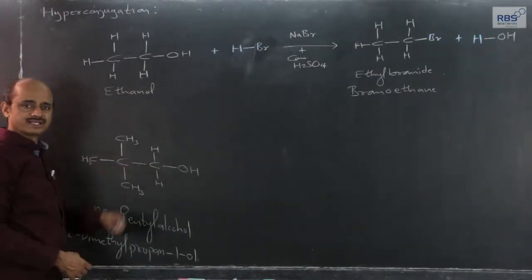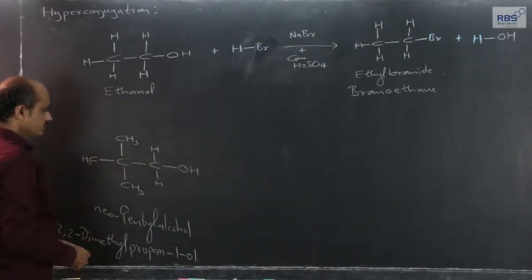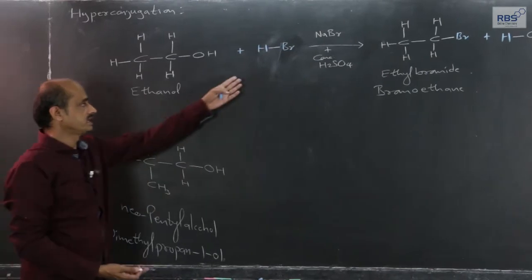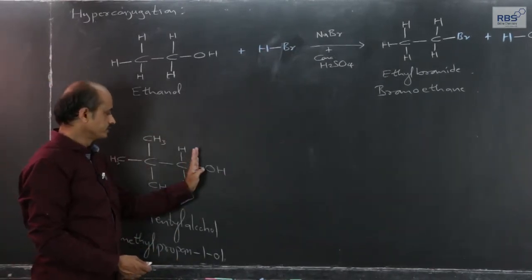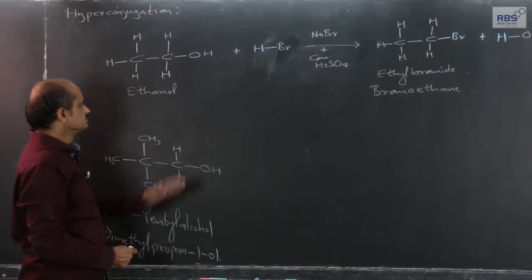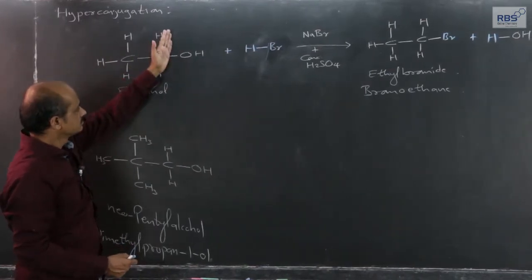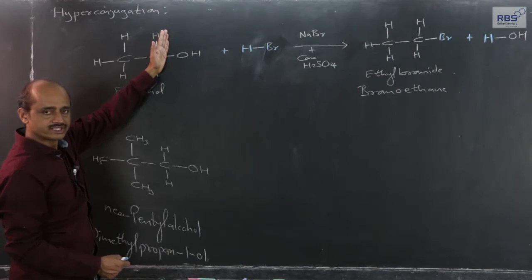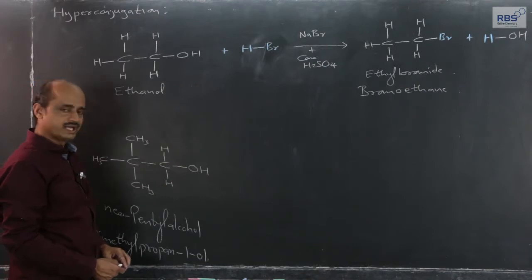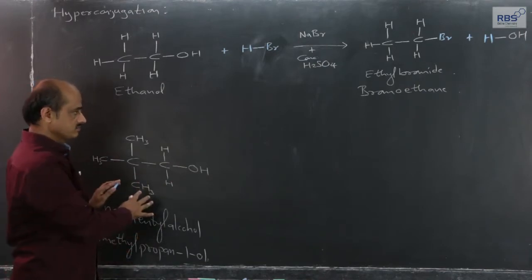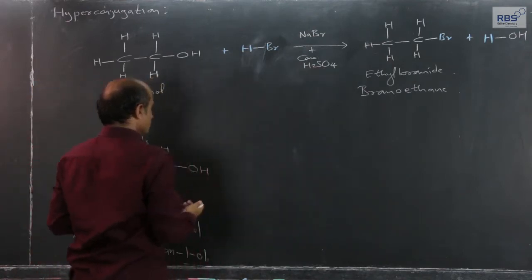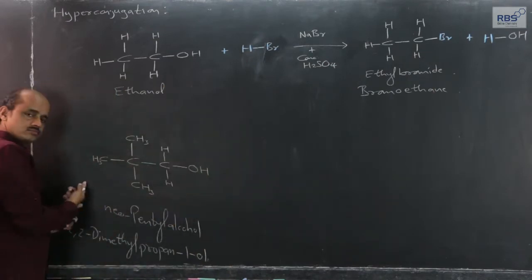This is a very simple example. Similarly, if we take the example of neopentyl alcohol with HBr, what we expect is that OH will get replaced by bromine — the only difference is the alkyl group. We expect the same result, but what we get is different.